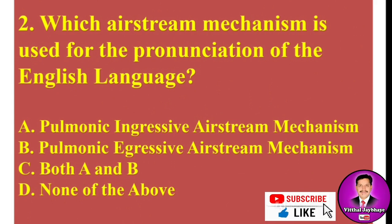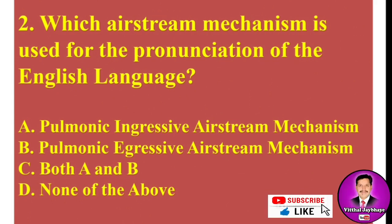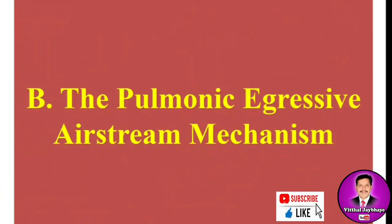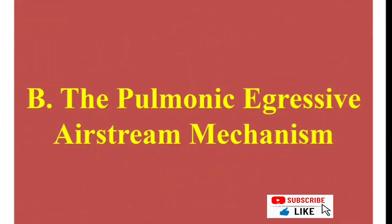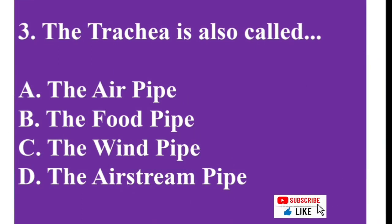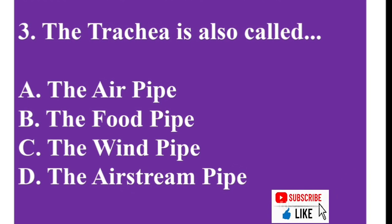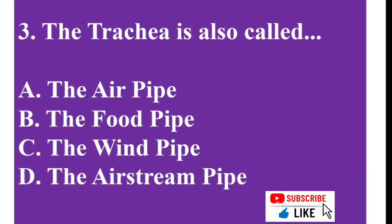MCQ number two: Which airstream mechanism is used for the pronunciation of the English language? Options: A) pulmonic ingressive airstream mechanism, B) pulmonic egressive airstream mechanism, C) both A and B, D) none of the above. The answer is B — the pulmonic egressive airstream mechanism.